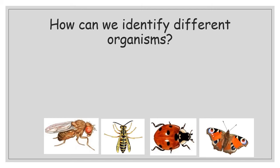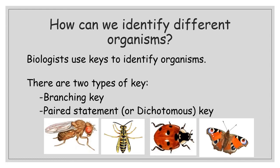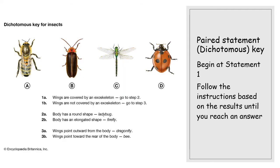Now that we've sampled our environments we have a bunch of organisms we need to identify — but how do we do that? Looking at those four pictures you might think of a fly, a wasp, a butterfly and a ladybird, but there's a huge number of different species. How do we identify the exact species of an organism we've found? We do that using keys. There are two different types: a branching key and a paired statement or dichotomous key. These will come up in tests.